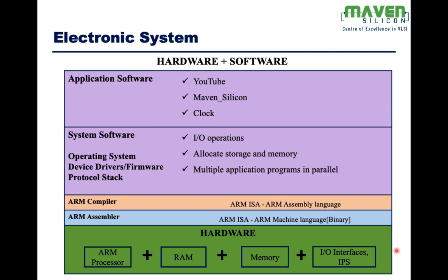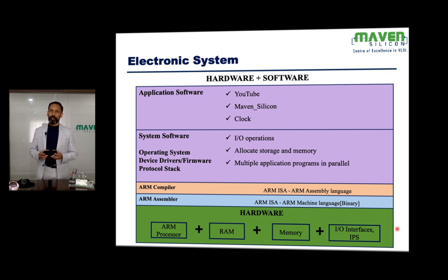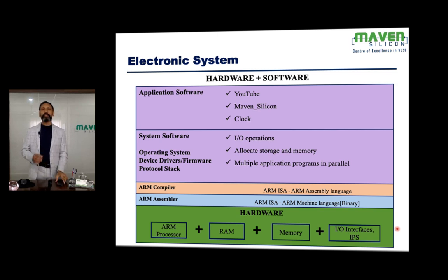You take any electronic system — it's composed of hardware and software. For example, iPhone 12 has hardware made up of the SOC called A14. This SOC has almost everything needed for iPhone 12. To make a smartphone, we need different kinds of hardware components. We call these hardware components as IPs — intellectual properties. In some cases, the hardware component could be very complex, so we call them as subsystems.